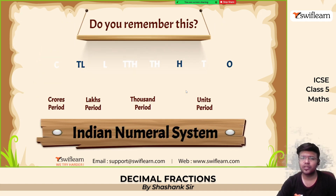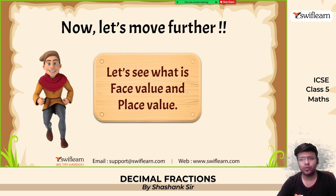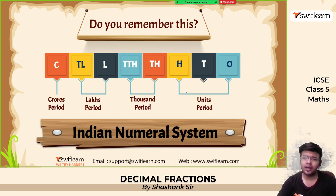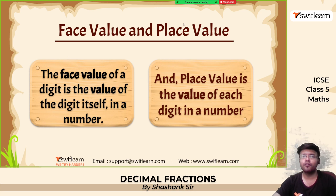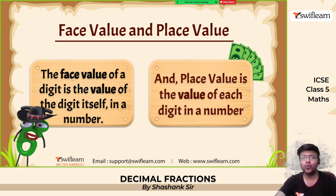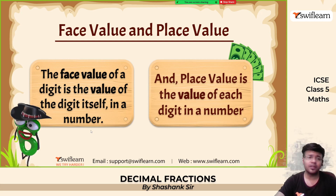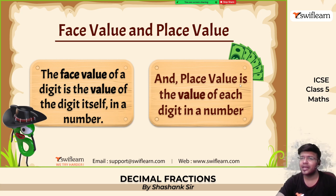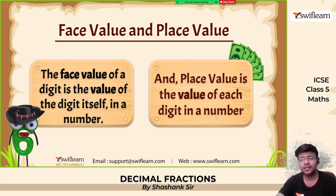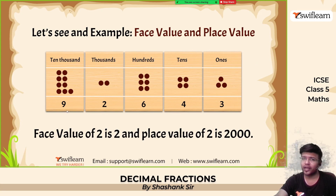Let's move further and see what face value and place value are. Do you remember the Indian numeral system? We have the units period, thousands period, lakhs period, and crores period. The face value of a digit is the value of the digit itself in the number — whatever the digit is, that same number is the face value. The place value is the value of the digit according to its position in the number.